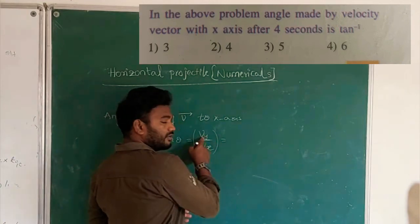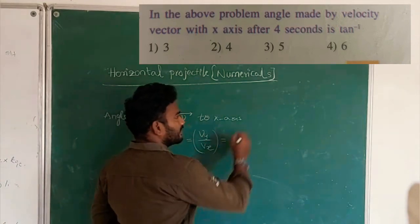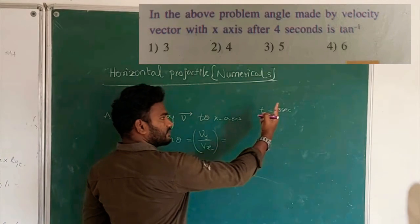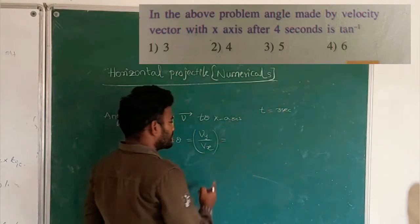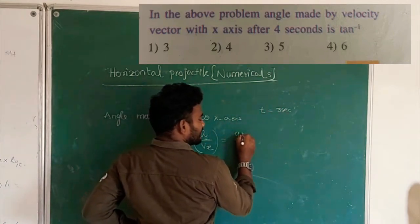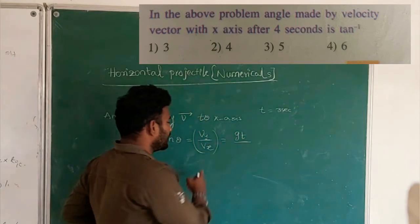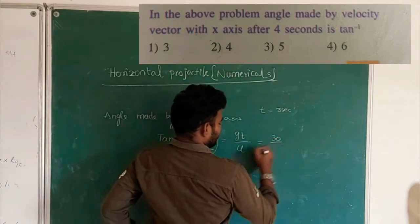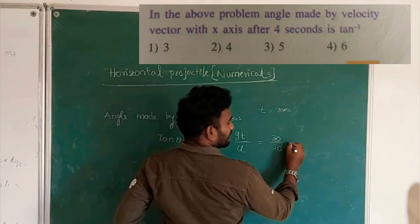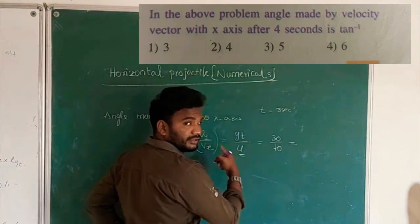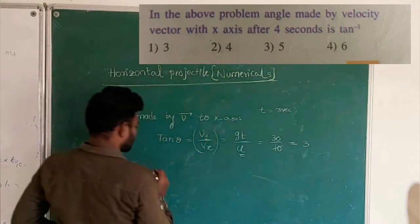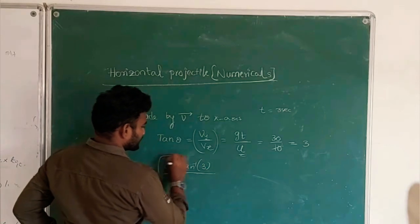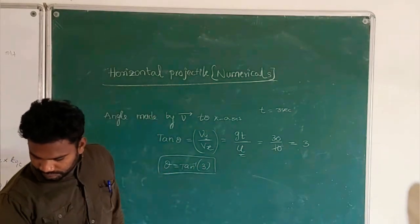Substituting the values from the previous problem at t = 3 seconds: Vy = Gt = 10 × 3 = 30, and Vx = U = 10. So tan θ = 30/10 = 3. Therefore θ = tan⁻¹(3) is the answer.